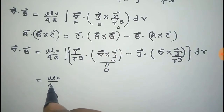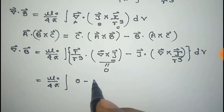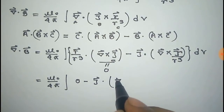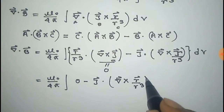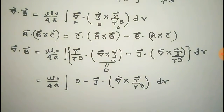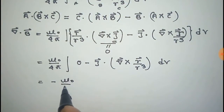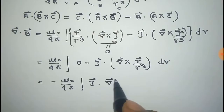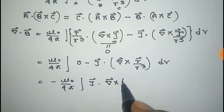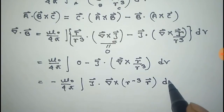So this is equal to mu0 by 4 pi, integration of 0 minus j vector dot curl of r vector by r cube into dV. We can write r vector by r cube as r to the power minus 3 into r vector, into dV.